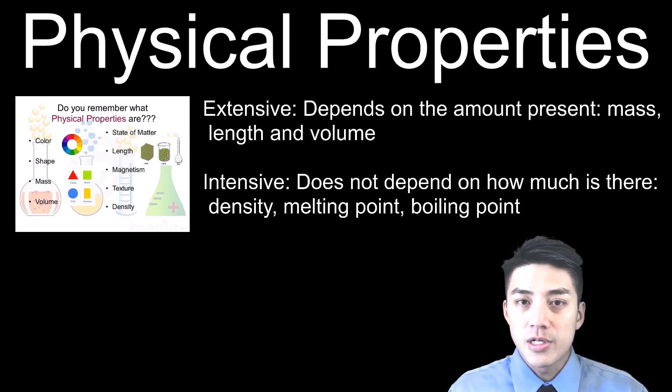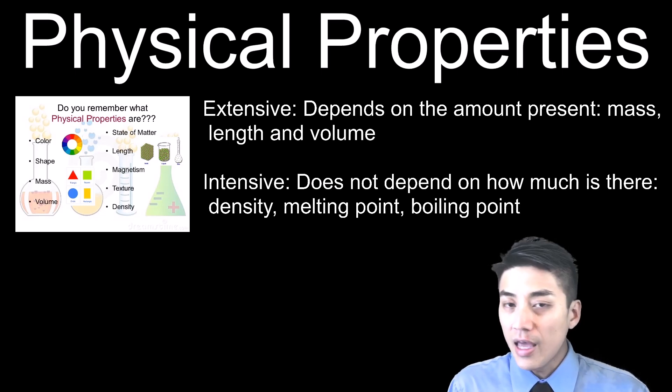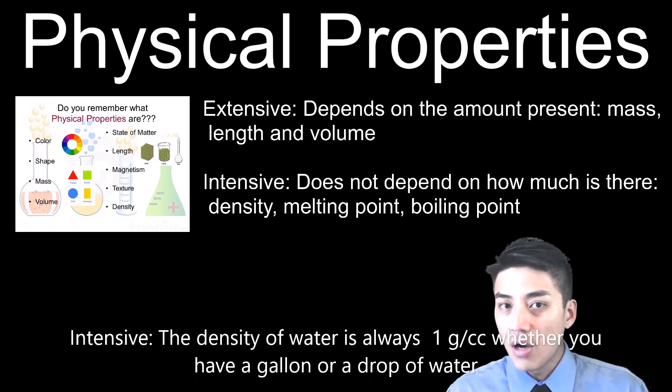Meanwhile, intensive properties do not depend on how much is there. So for example, take some water. If you have a gallon of water or you have a drop of water, the density of water will remain the same. It's still one gram per cubic centimeter.